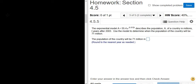The exponential model A equals 55.4e to the 0.012T describes the population A of a country in millions, T years after 2003.